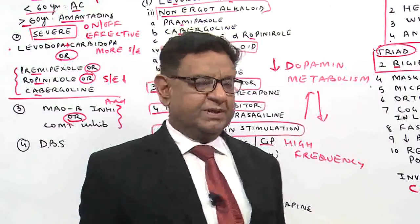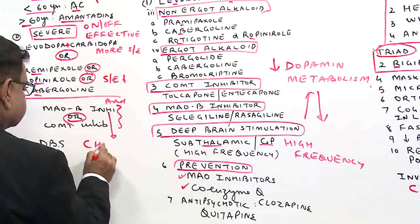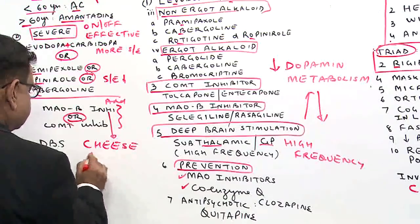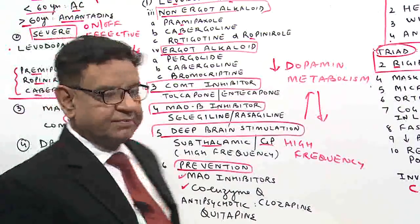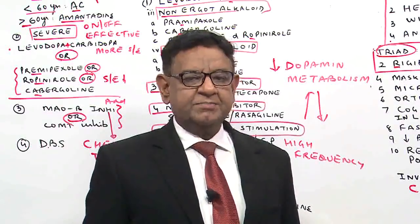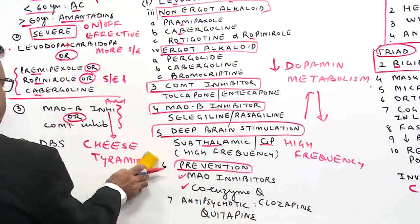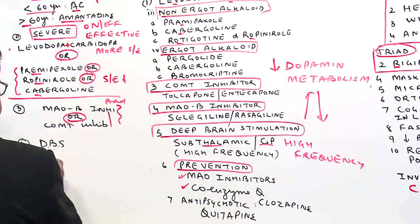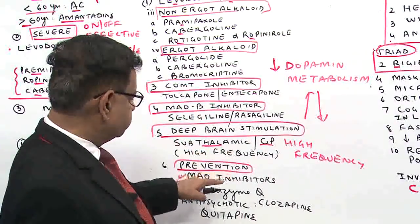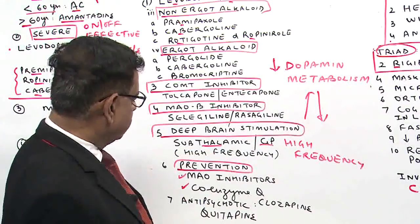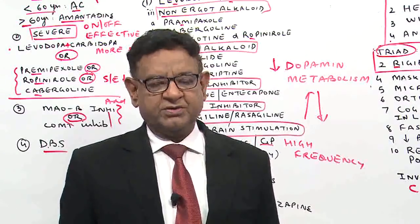When giving MAO-B inhibitors, patients should be specifically told not to take cheese, because cheese contains tyramine and it can precipitate severe hypertension. We can give deep brain stimulation at any time during treatment — high-frequency stimulation to the subthalamic nucleus or globus pallidus — which can help slow down the progression of the disease.